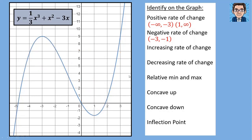So the decreasing rate of change interval goes from negative infinity all the way to negative 1. And the increasing rate of change is from negative 1 all the way up to positive infinity.